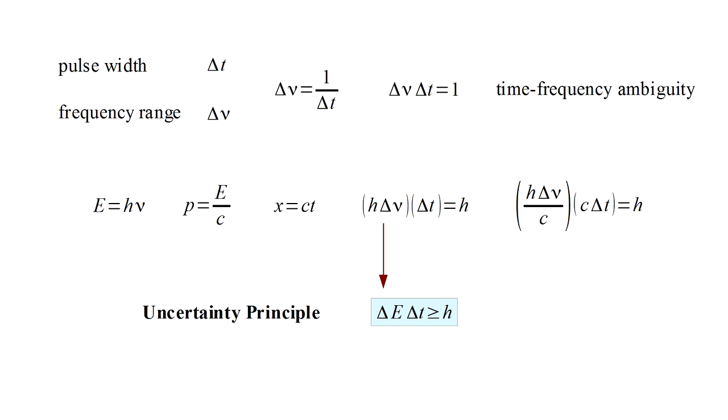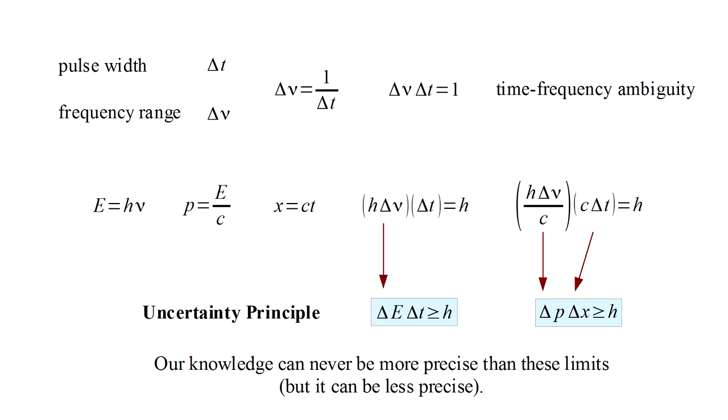Now divide and multiply by the speed of light. This gives us a second form of the uncertainty principle. Uncertainty in energy over the speed of light is delta p, the uncertainty in momentum. The speed of light times uncertainty in time is delta x, the uncertainty in position. And delta p times delta x can never be less than Planck's constant. The reason the equal signs are replaced by greater than or equal to signs is because while our knowledge can never be more precise than these limits, it can be less precise. The uncertainty principle represents the ultimate limits of what it is possible for us to know about a photon, regardless of any technology we may develop.